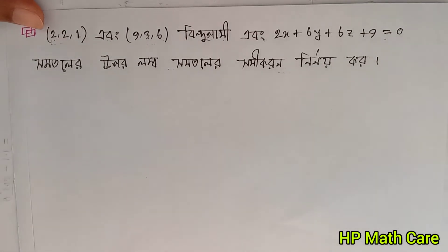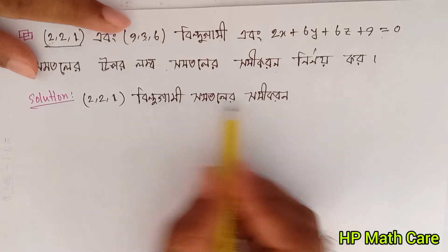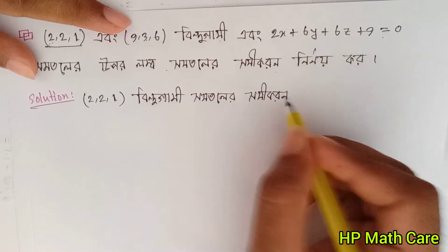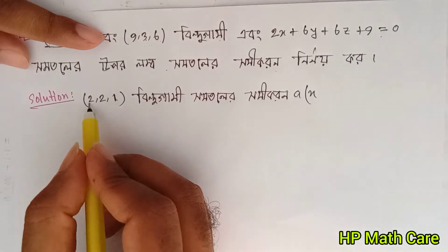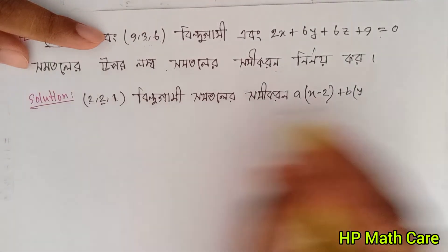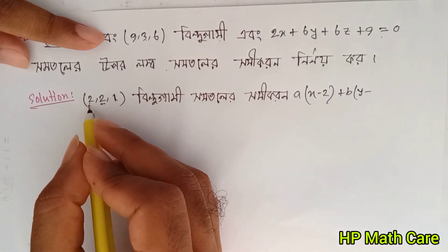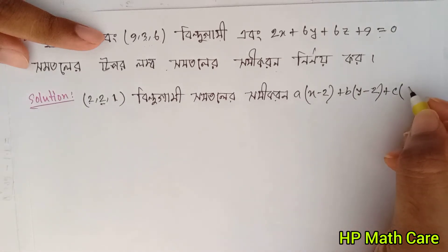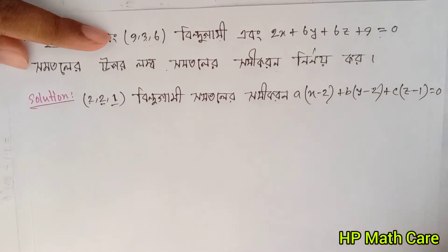We have to do this. You can see that 2x plus 1 is equal to 0, and 2x plus 2 is equal to 0, so 2x plus 2x plus 1 is equal to 0.